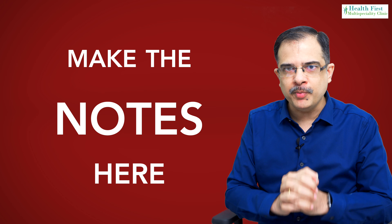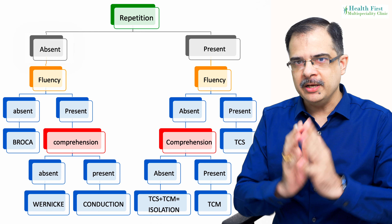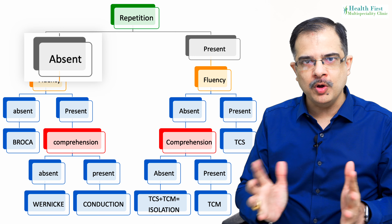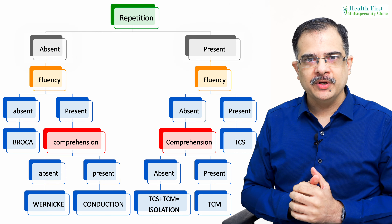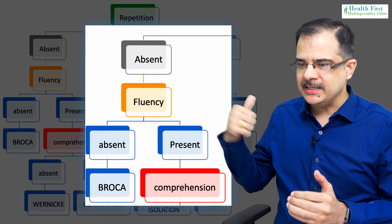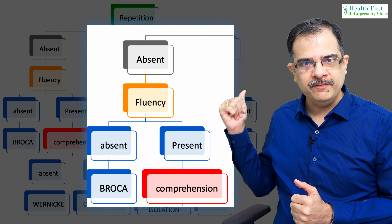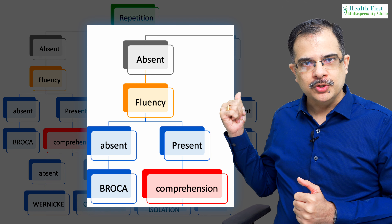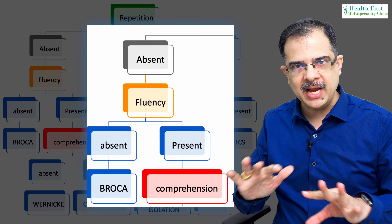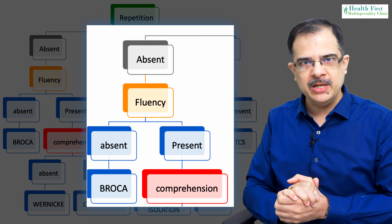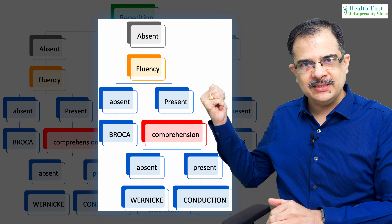Here is the important flowchart. First, ask the patient to perform repetition — repetition can be absent or present. First arm: repetition is negative. Then assess fluency — fluency can be preserved or absent. If repetition is absent and fluency is also absent, the diagnosis is Broca's aphasia. That is the only information you need to make a diagnosis of Broca's aphasia.